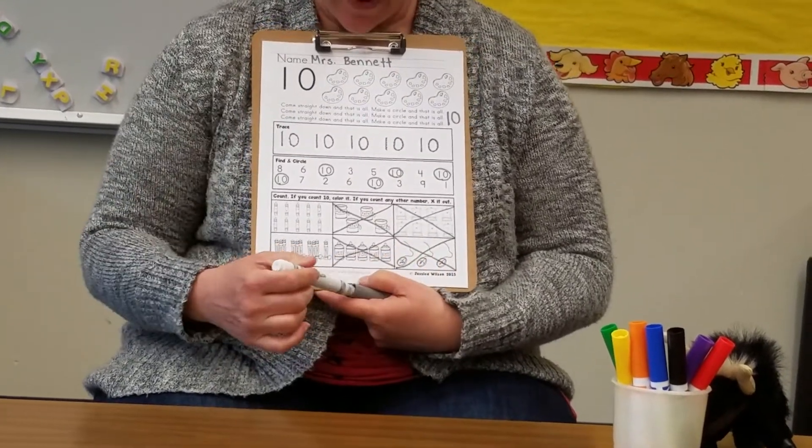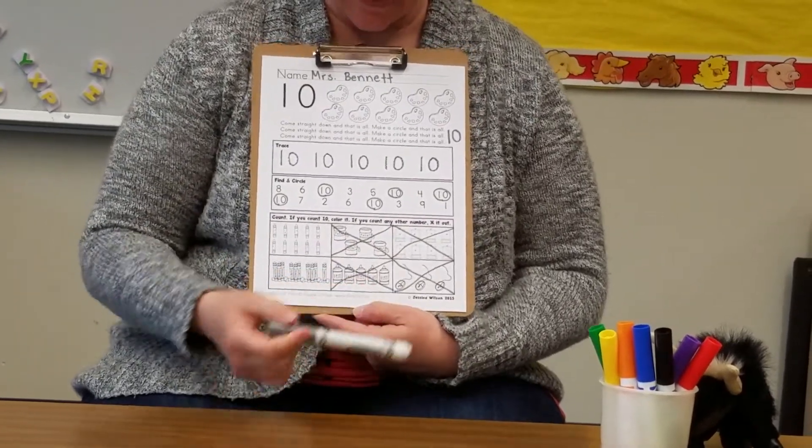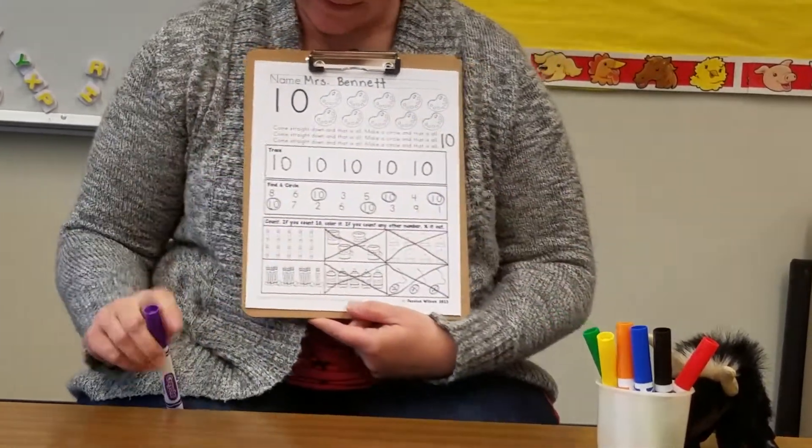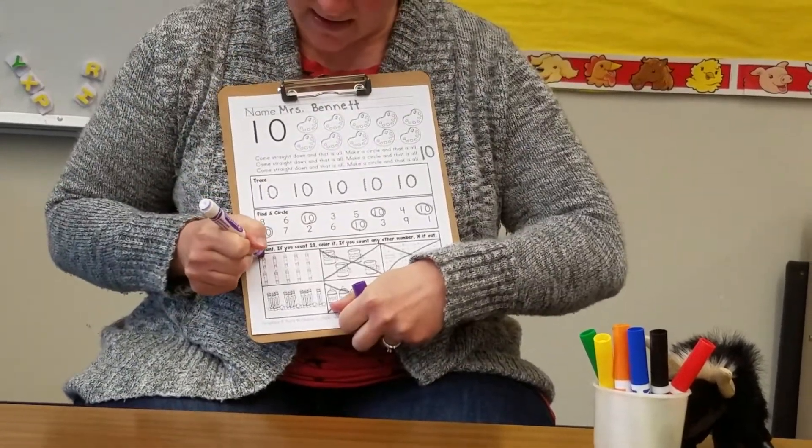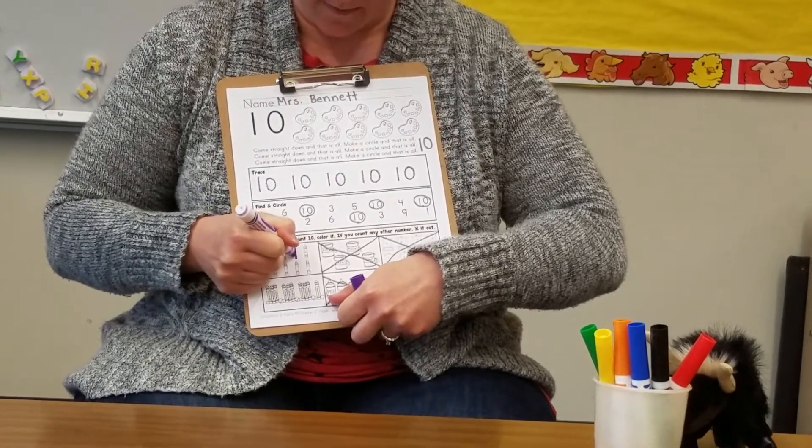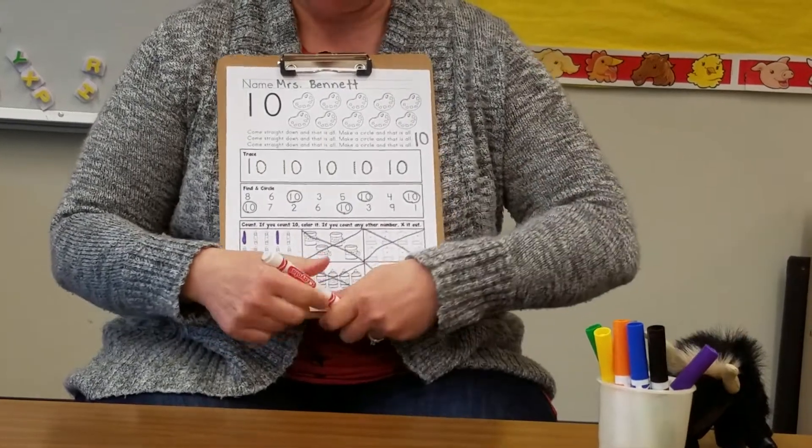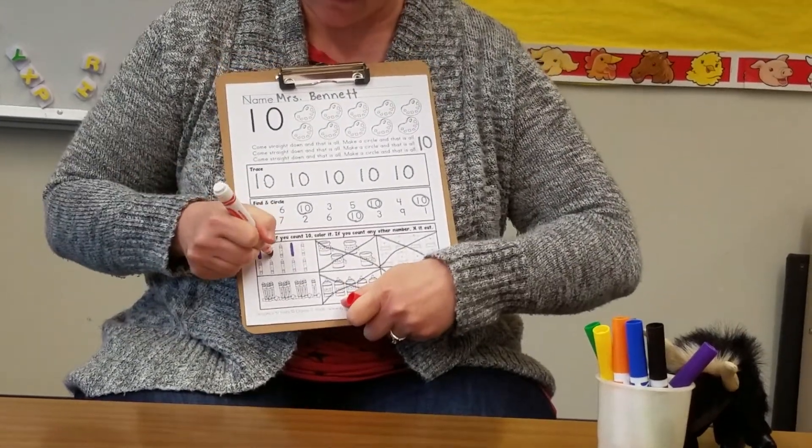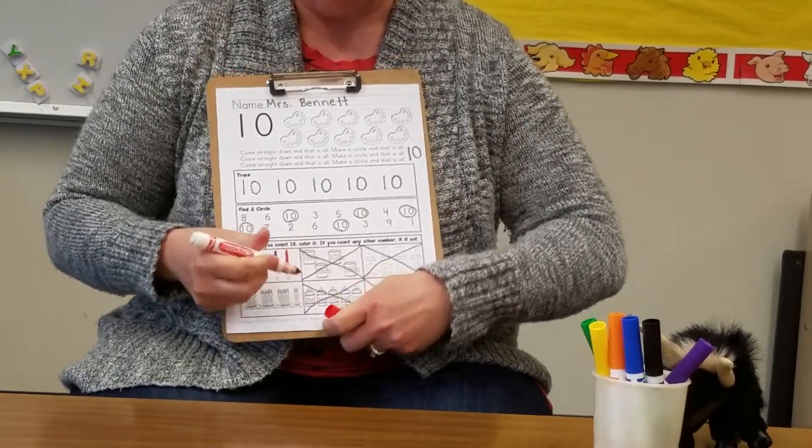There we go. We have all of our objects counted and the ones that don't have 10 x'ed out. And now it's time to color them. So I'm going to color the crayons right here. There we go. Make a couple of them purple. You can color your pictures as well. You can color them with crayons or markers or whatever you have to do some coloring at your house.